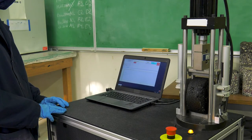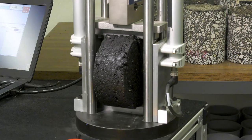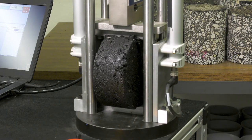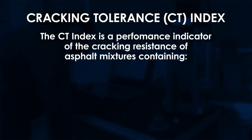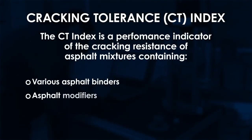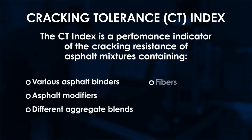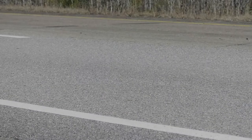For the ITCT, load is applied to a cylindrical asphalt specimen until fracture failure. This data is used to determine the asphalt cracking tolerance index or CT index. The CT index is an index performance indicator of cracking resistance of asphalt. Typically, the higher the CT index value, the greater the cracking resistance of the mixture.